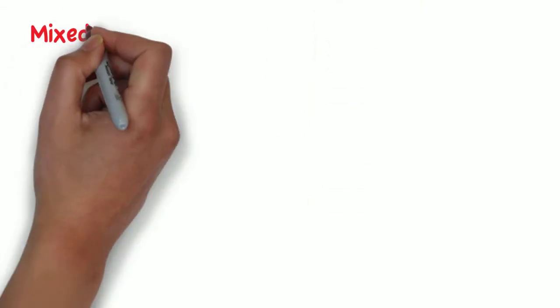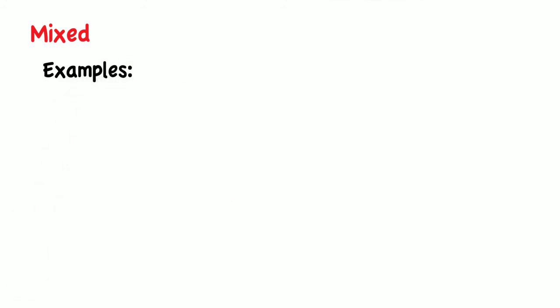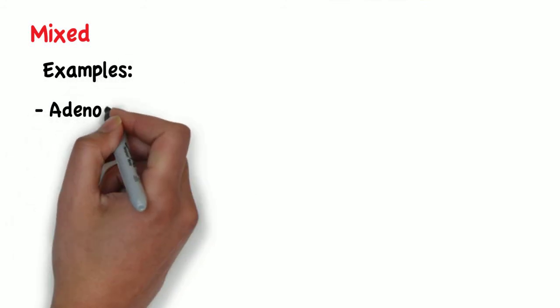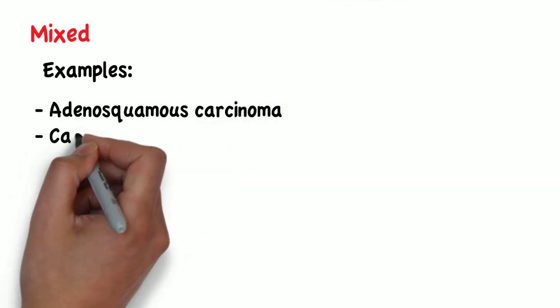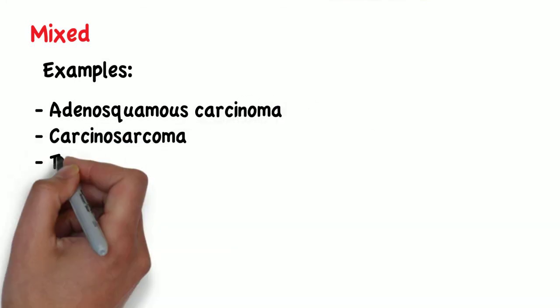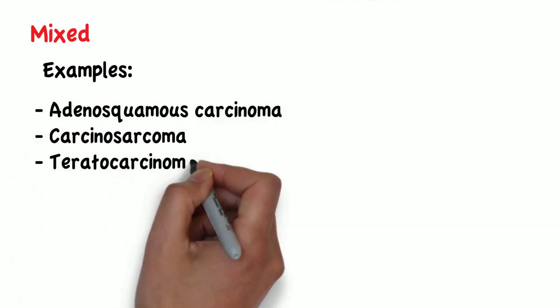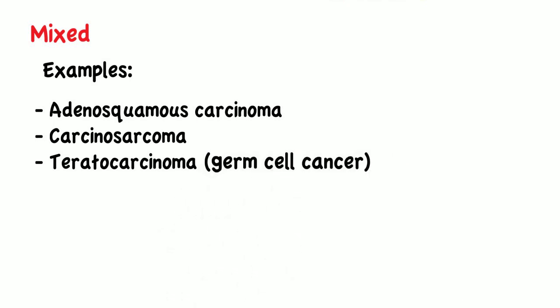Finally, we have mixed types of cancers, and these fit into two categories. For example, you may have an adenosquamous carcinoma, carcinosarcoma, or a teratocarcinoma, which is a germ cell cancer.